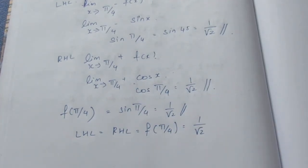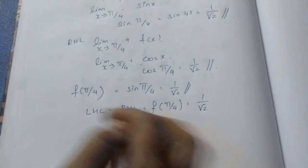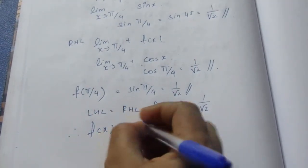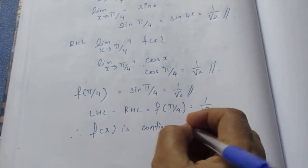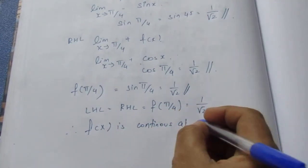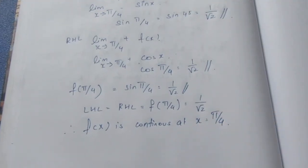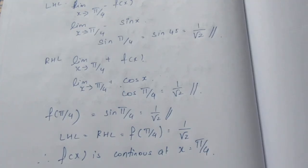Since LHL = RHL = f(π/4) = 1/√2, f(x) is continuous at x = π/4. Therefore there is no point of discontinuity at x = π/4, and f(x) is continuous at x = π/4.